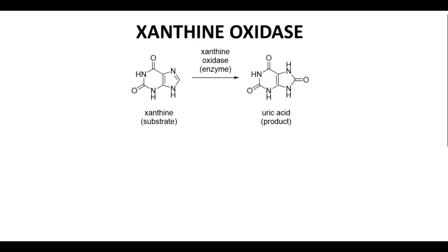Xanthine oxidase is an enzyme. Xanthine oxidase converts xanthine, the substrate, into uric acid, the product.